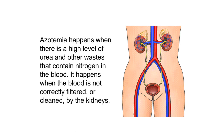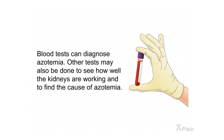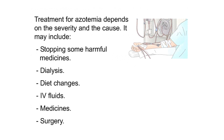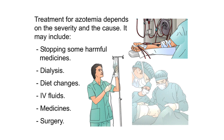Summary. Azotemia happens when there is a high level of urea and other wastes containing nitrogen in the blood, occurring when the blood is not correctly filtered by the kidneys. There are three types: pre-renal, primary renal, and post-renal, each with a different cause. Blood tests can diagnose azotemia, and other tests assess kidney function and identify the cause. Treatment depends on severity and cause, and may include stopping harmful medicines, dialysis, diet changes, IV fluids, medicines, or surgery.